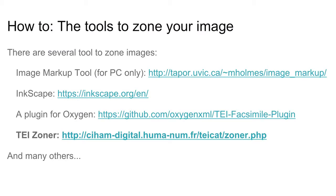You will ask: how do I know the coordinates of my boxes? There are several tools you can use. Some are easier than others. One easy and very nice tool is called IMT, Image Markup Tool, but it works only on Windows. Or you could use Inkscape, which is a multi-platform tool — extremely powerful but also a bit complicated to learn. There is also a plugin for Oxygen, which can sometimes be cumbersome to use, but it's okay, you can try that.